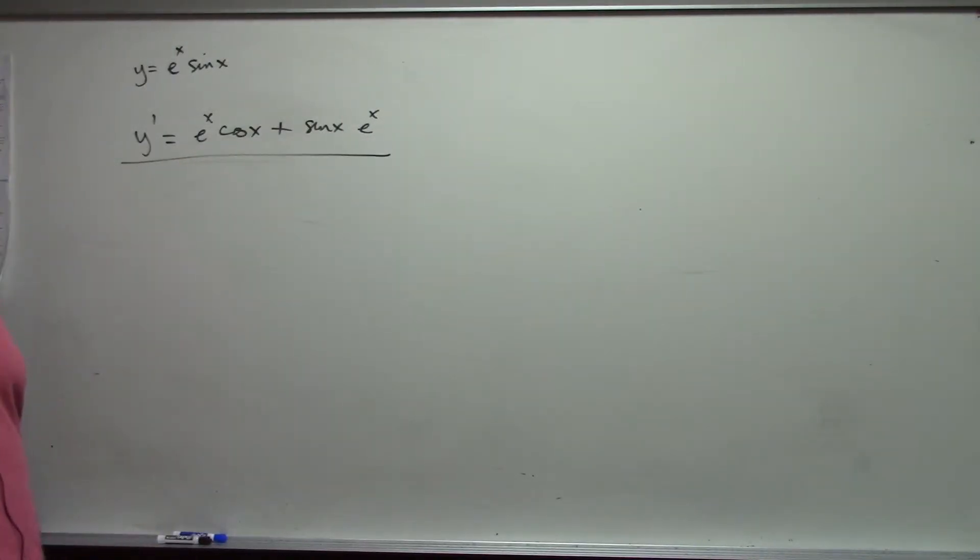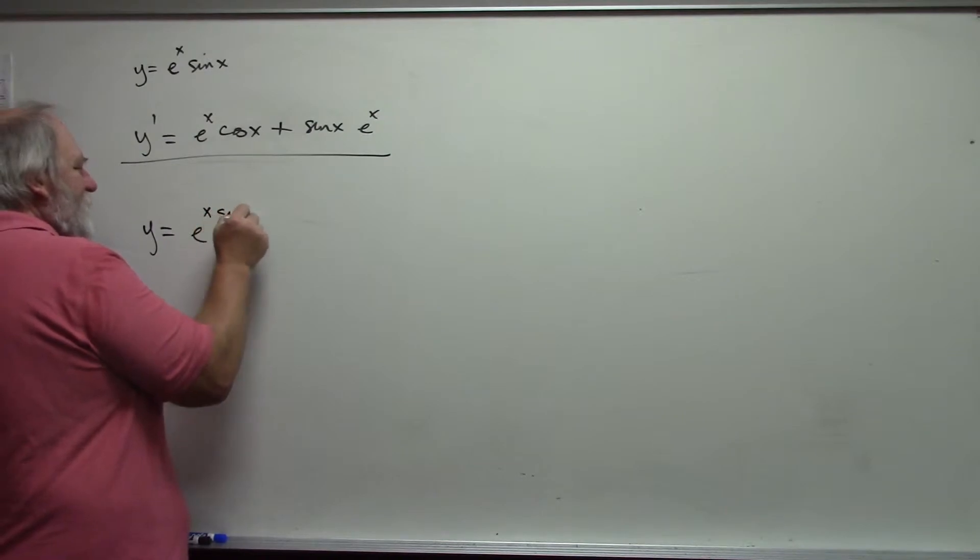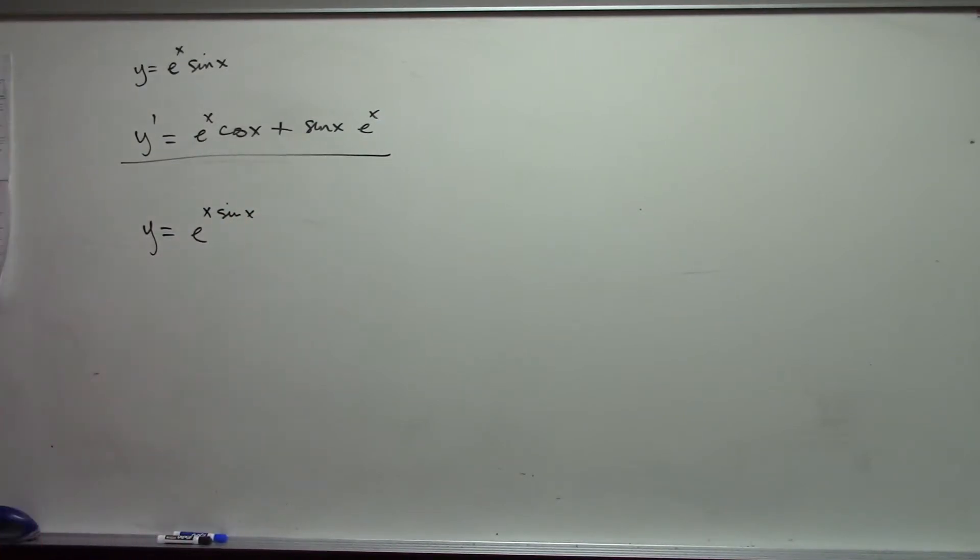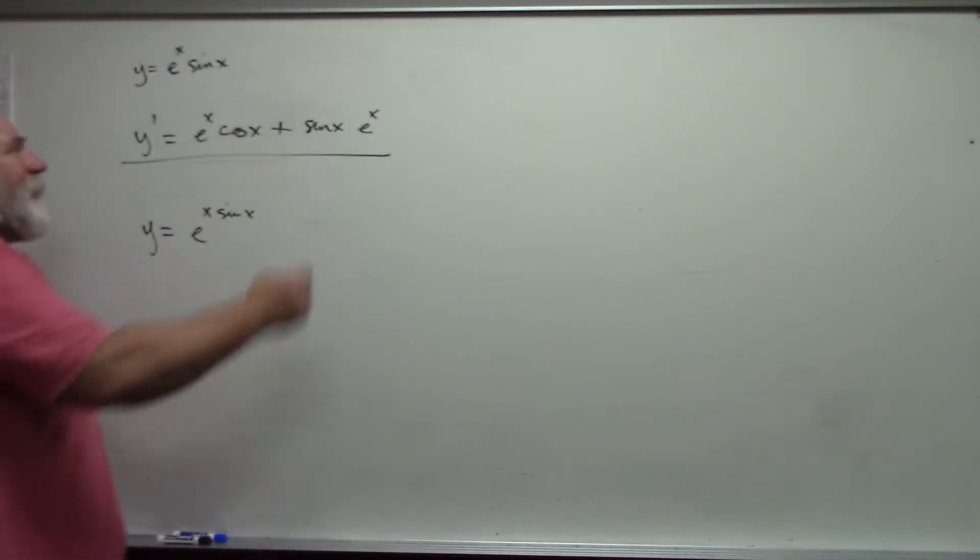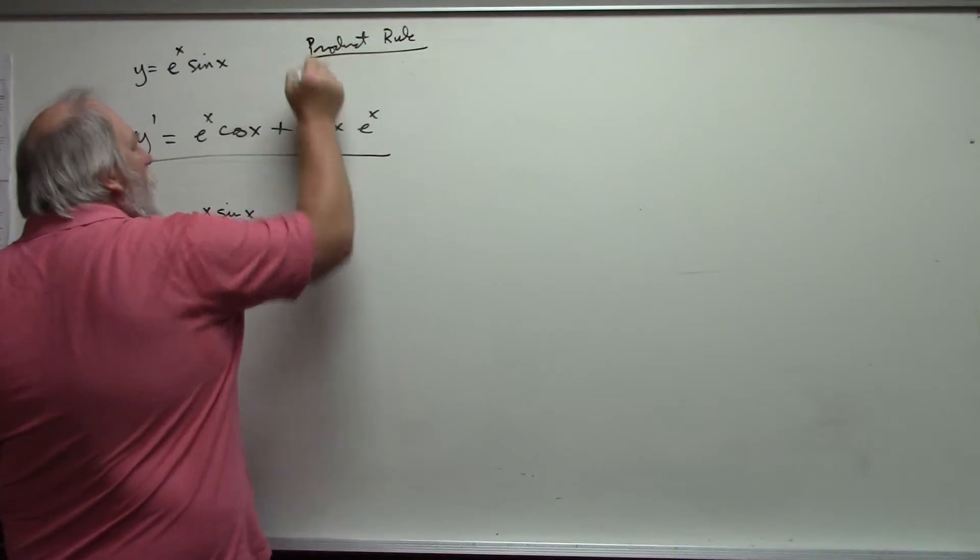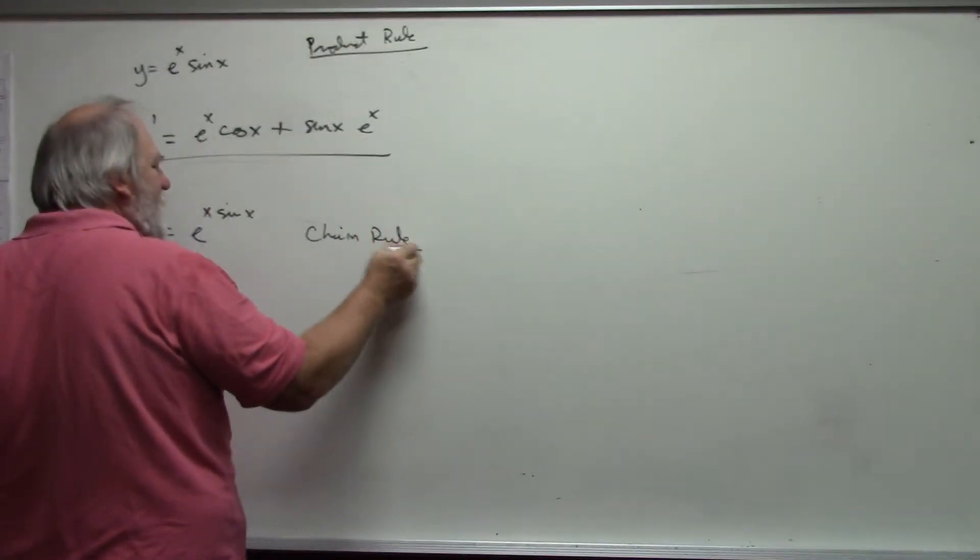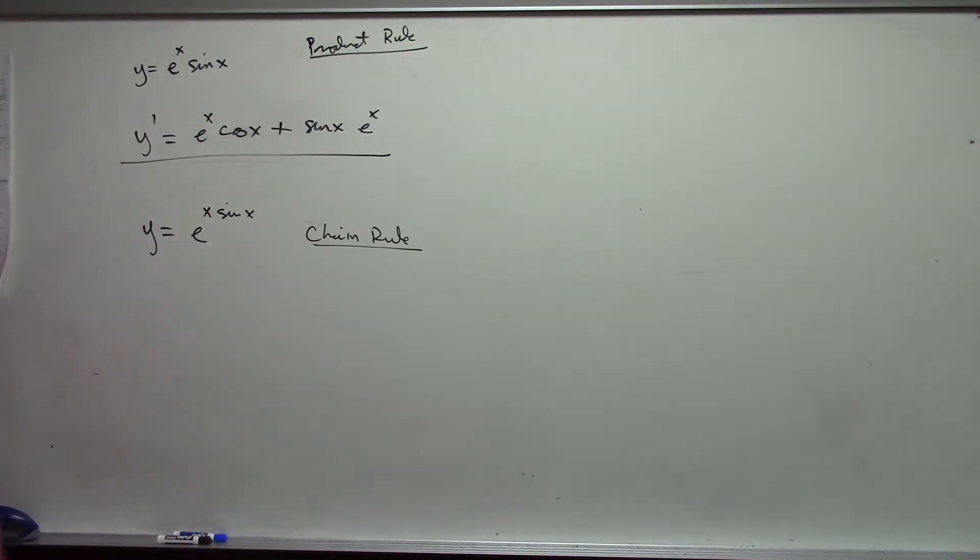If I have y is equal to e to the x sine x, similar but different. In this case, I had to use the product rule. In this case, I have to use the chain rule. This is a composition, not a product.